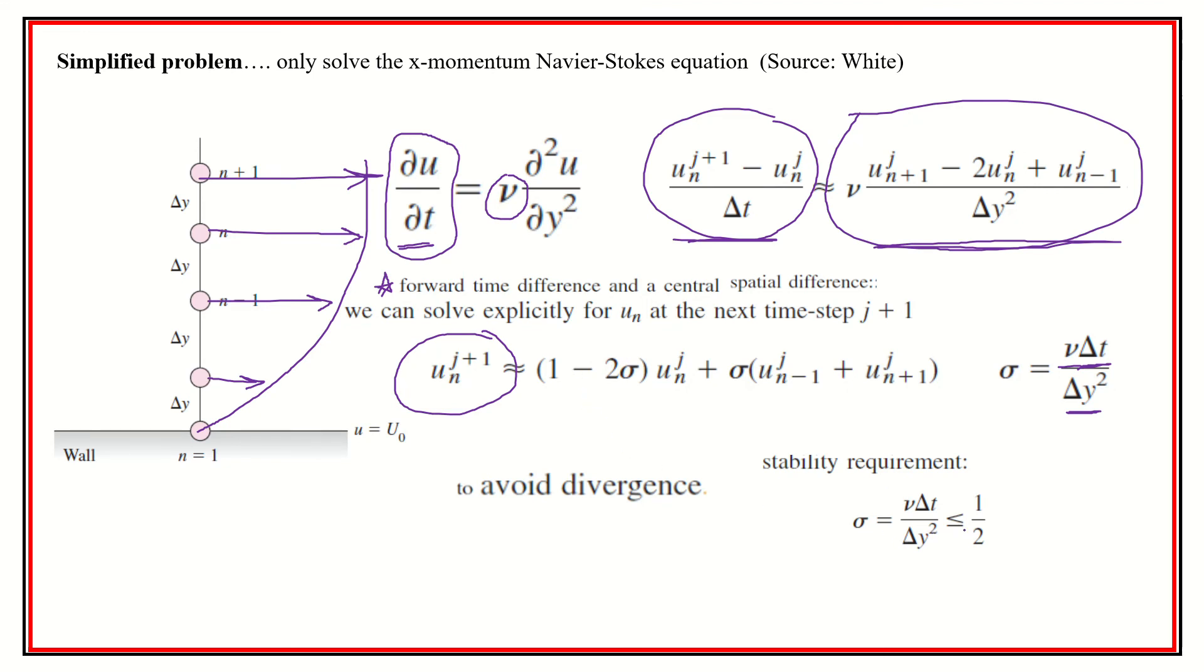Because of that, in this simple example, they wouldn't use this. They'd use something that was more robust in terms of the numerical assumptions or the numerical technique. But this is again just the simplest of explanations.